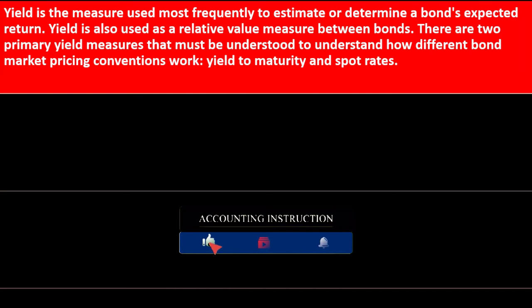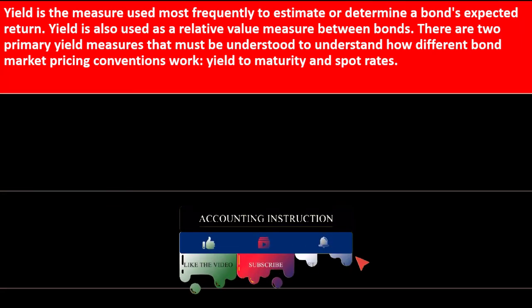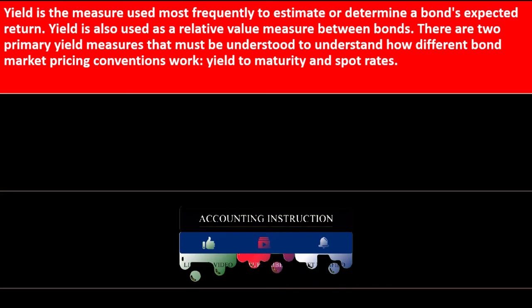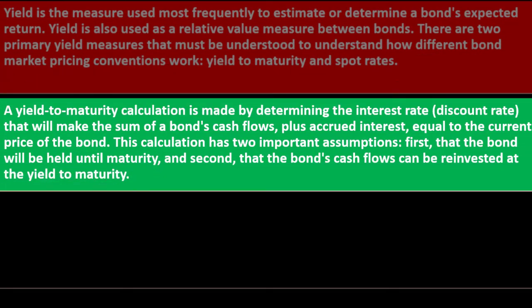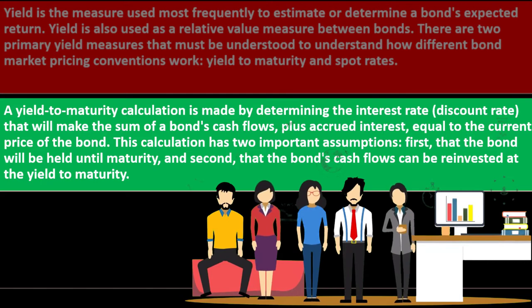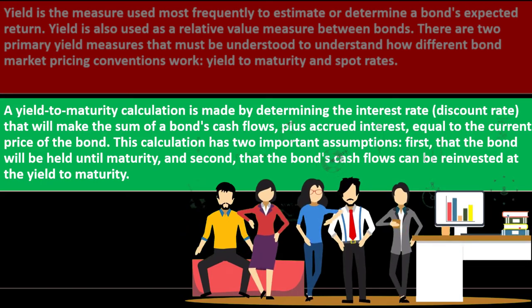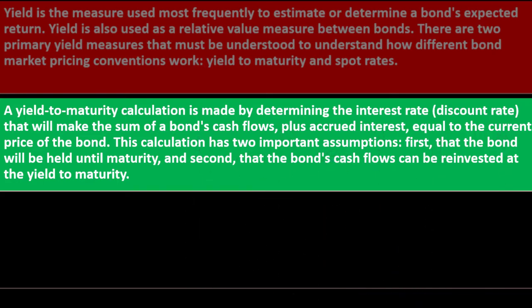A bond's expected return — yield — is the measure used most frequently to estimate a bond's expected return and is also used as a relative value measure between bonds. When comparing bonds, yield is the method used for that comparison. There are two primary yield measures to understand: yield to maturity and spot rates. A yield-to-maturity calculation is made by determining the interest rate (discount rate) that will make the sum of the bond's cash flows plus accrued interest equal to the current price of the bond.